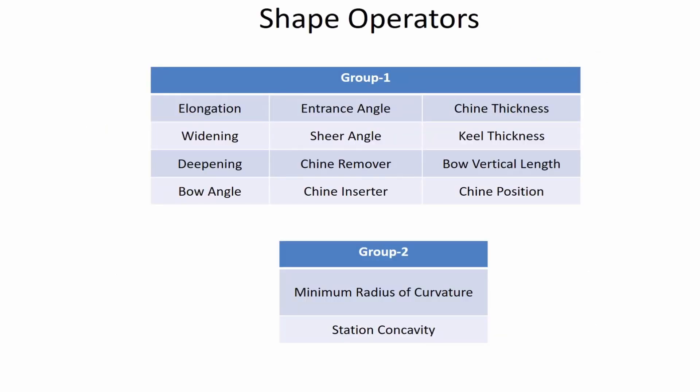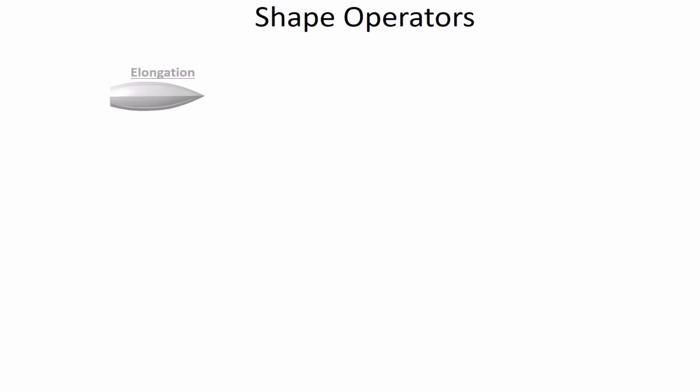For the parametric modification of yacht hulls, we developed two sets of shape operators: Group 1 and Group 2. Each shape operator modifies a specific feature of the hull. For example, the elongation shape operator modifies the length of the hull while keeping the overall shape.